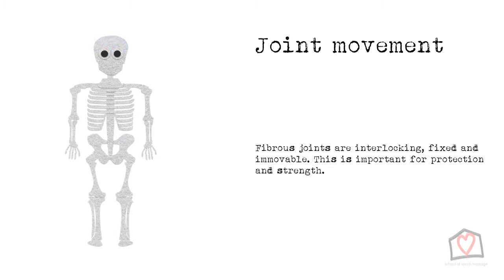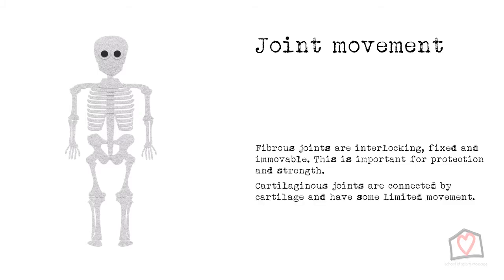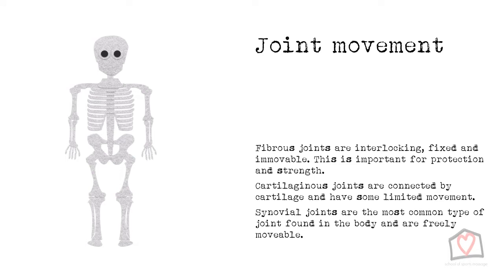The second type of joint are cartilaginous joints. These are connected by cartilage and have some, albeit limited, movement, and are seen in the vertebral column. The third type, and the one with the most capacity for movement, are the synovial joints. These are the most common type of joint found in the body and are freely moveable, including the shoulder, hip, and elbow.